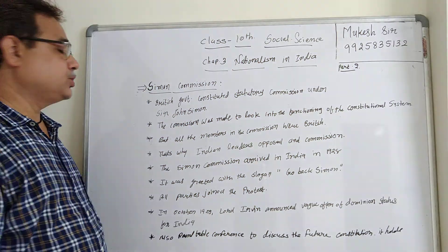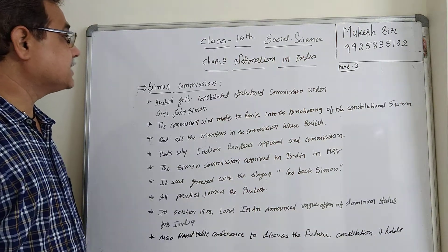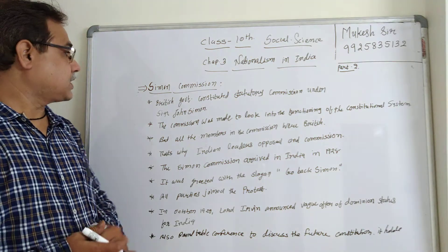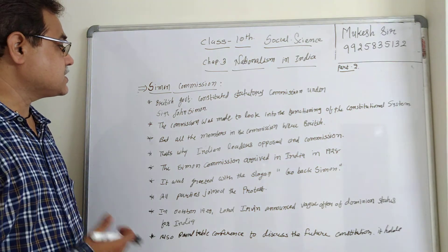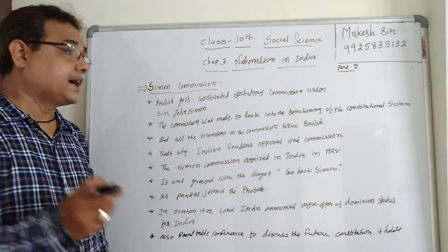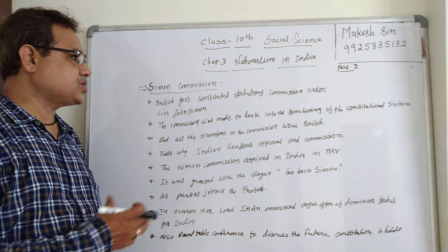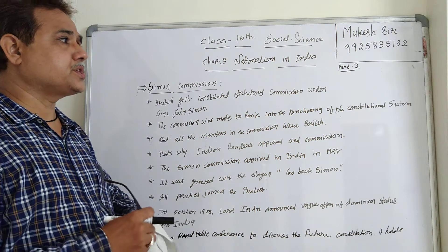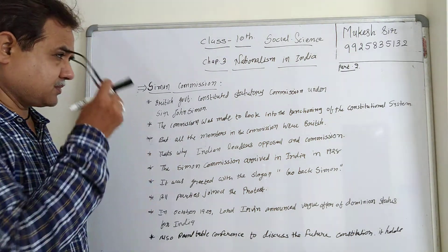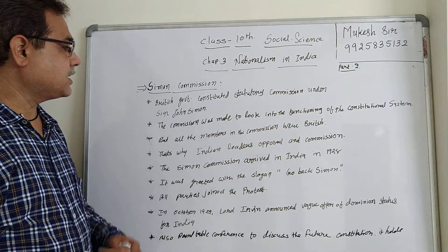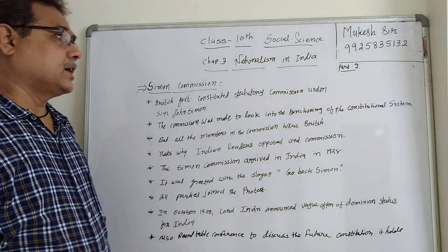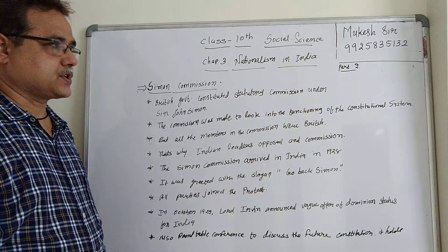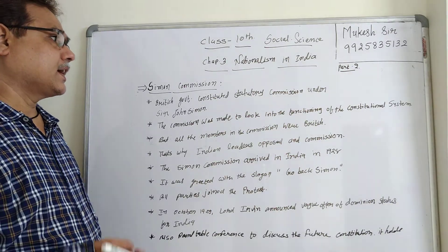Simon Commission. The British government set up a statutory commission under Sir John Simon. The commission was made to look into the functioning of the constitutional system — yani ye Simon ke under mein ek commission tha, jo hamare constitutional system se related tha.